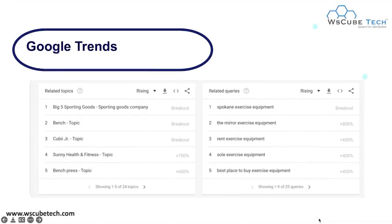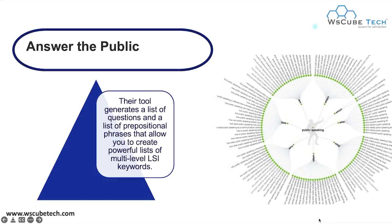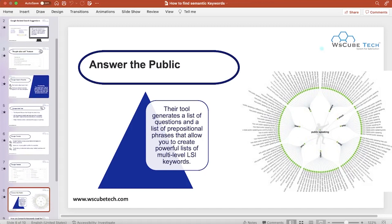From Google Trends you can see results including related topics and related queries, and you can list all these queries in your semantic keyword list. Next, we have Answer the Public — a tool that generates a list of questions and prepositional phrases, allowing you to create a powerful list of multi-level latent semantic index keywords. This tool gives you ideas about all questions related to your particular keyword.